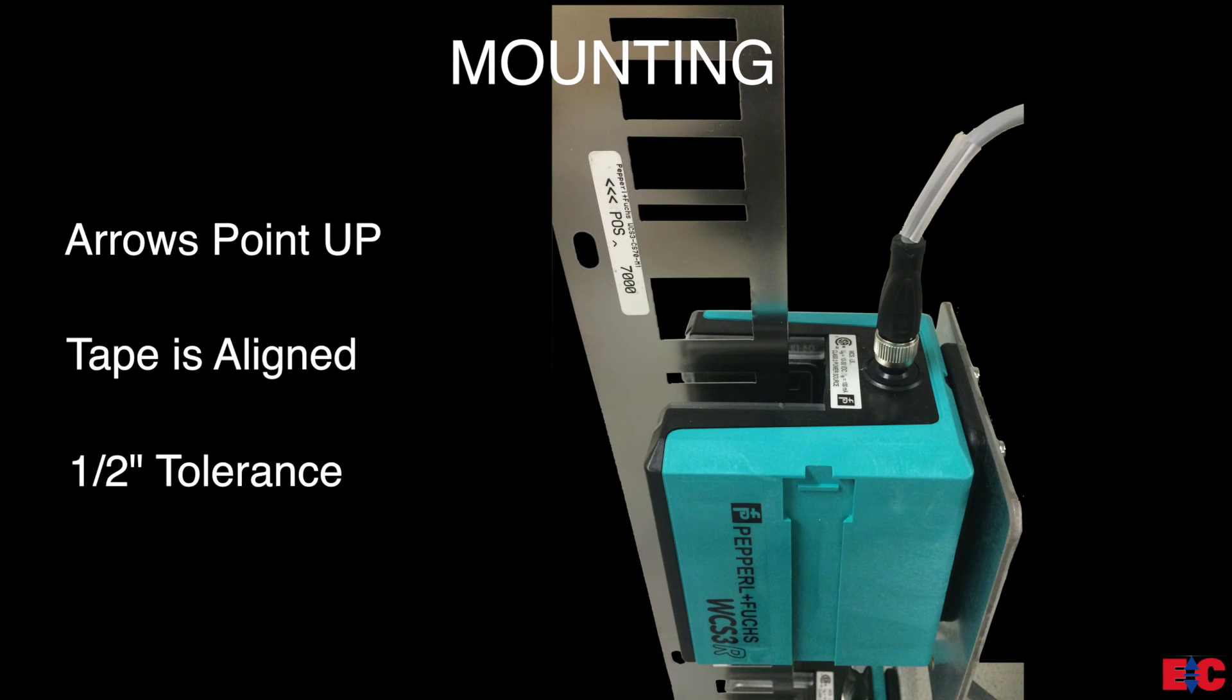Once the Lambda tape reader bracket is mounted, verify once again that the arrows on the labels on the Lambda tape are pointed in the upward direction and that the Lambda tape is aligned with the notch located in the Lambda tape reader. Remember that the Lambda tape readers have a half inch tolerance all around.